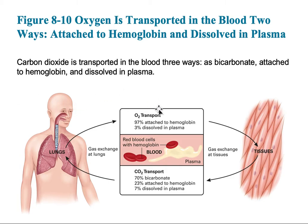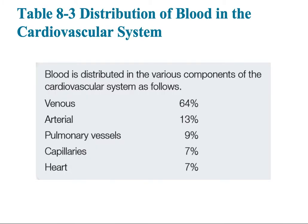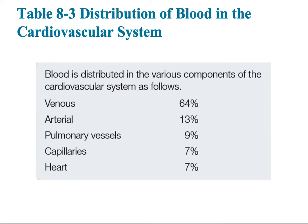Oxygen is important for aerobic metabolism. We take that oxygen, which is tightly bound to the red blood cell, and it is deposited into the cells and tissues. The red blood cell then picks up carbon dioxide, which is transported back to the alveoli to be exchanged and ventilated off.